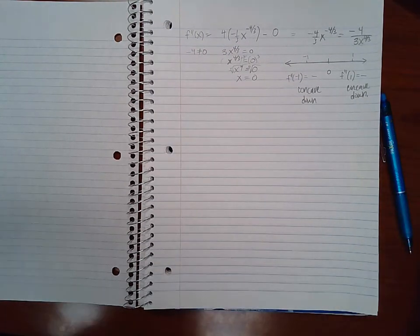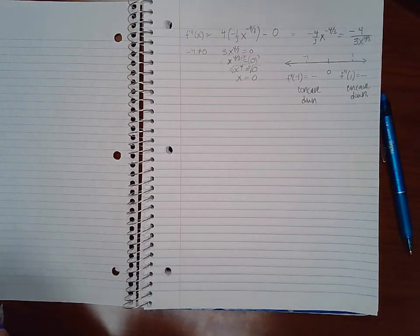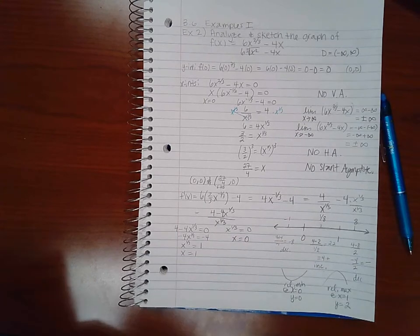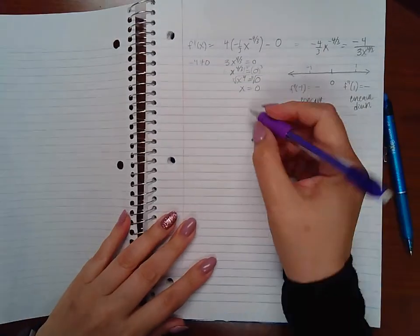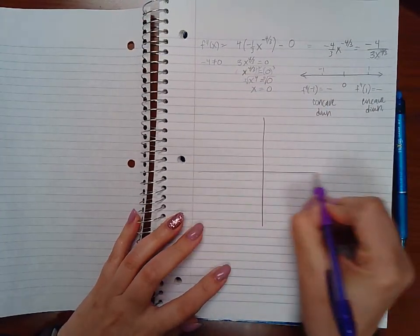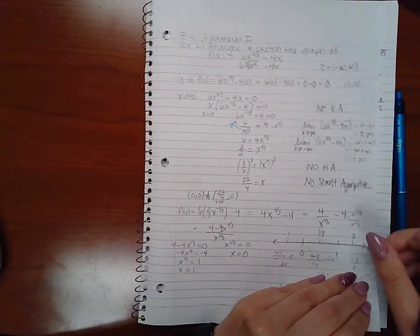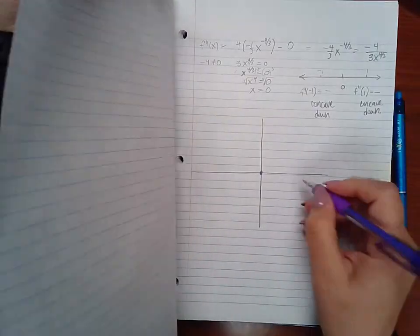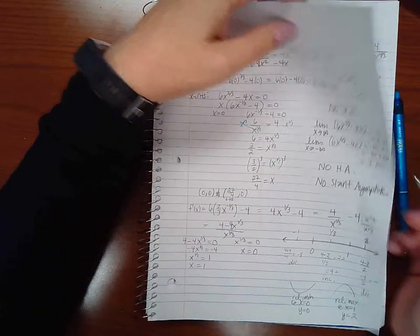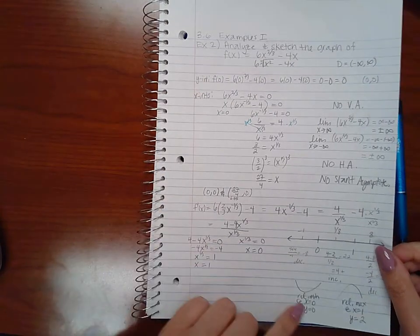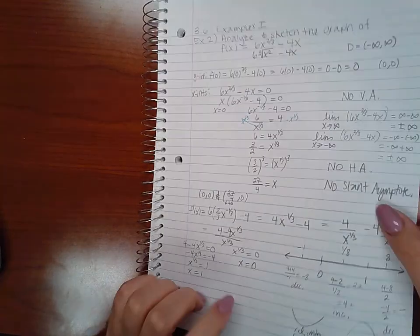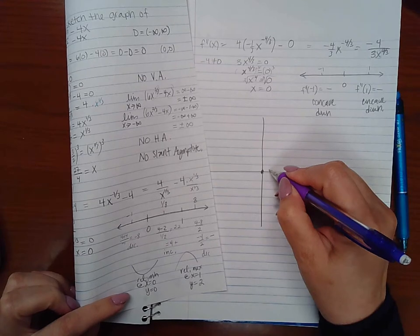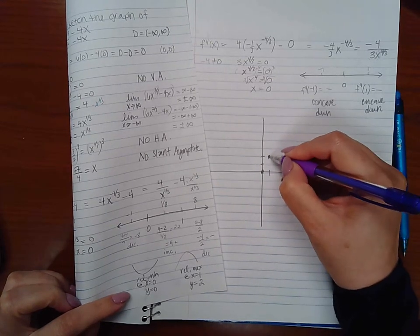So then let's go ahead and try to put all of our information together. If I draw a graph and I have a y-intercept of (0, 0) and I have an x-intercept of 27/4 here. Then we have a relative min here. And we have a relative max at (1, 2). So about right there.